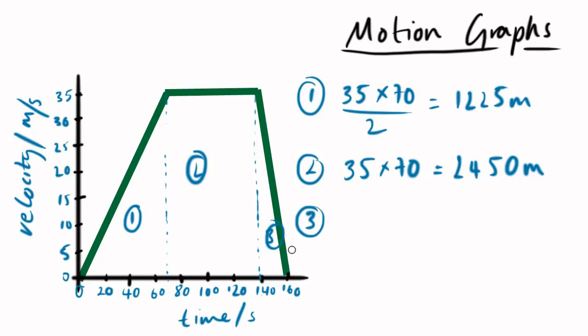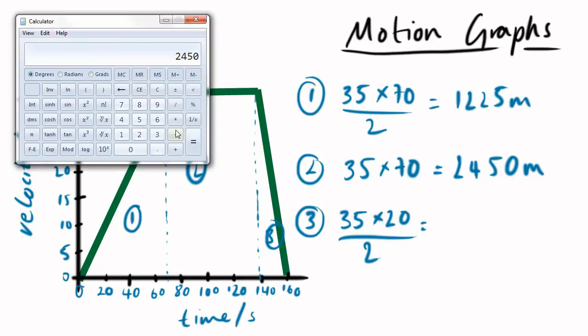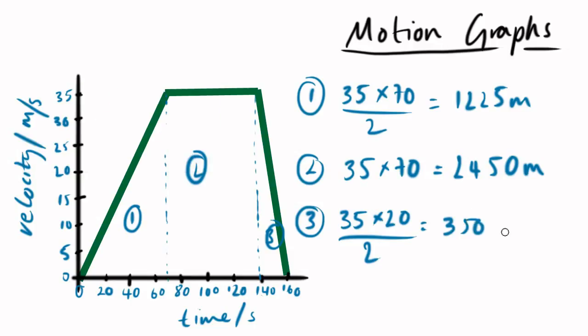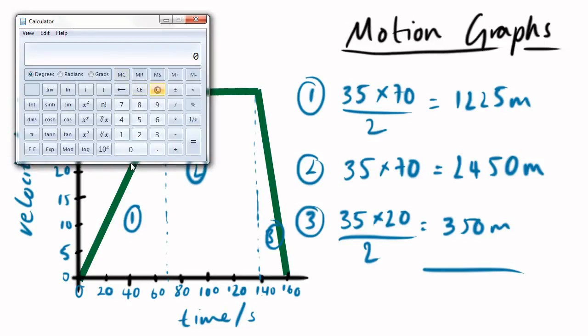And then, the last section, 35 times 20, divided by 2, because it's a triangle. 35 times 20, divided by 2, equals 350 metres. The total distance travelled, then, is first distance, plus this, plus this. 1,225, plus 2,450, plus 350. The total distance travelled is 4,025 metres.